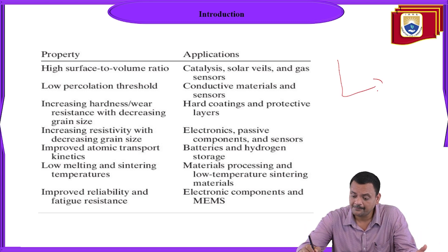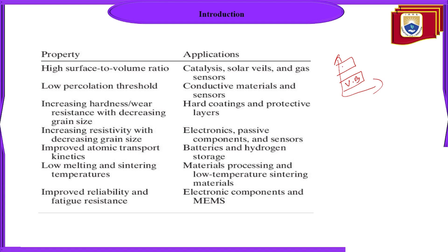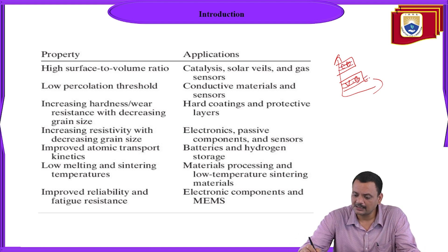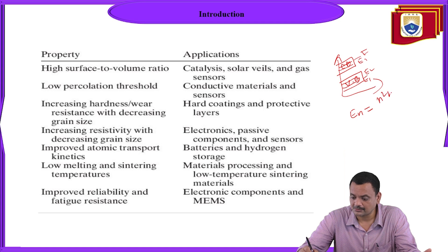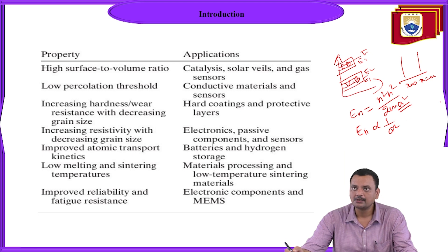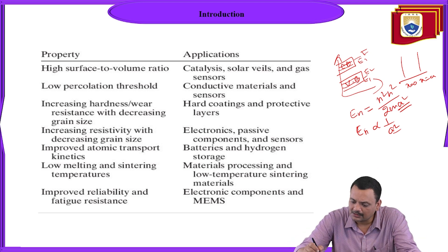In semiconductor optoelectronics, the band structure is very important, and it is characterized by the valence band and conduction band, each consisting of several energy levels such as E1, E2, E3, E4. These levels come from the formula Eₙ = n²ℏ²/(2mA²), where A is the region of confinement. Once A decreases, Eₙ is inversely proportional to A², so the energy levels shift toward higher energy, and the positions of both the valence band and conduction band shift accordingly.